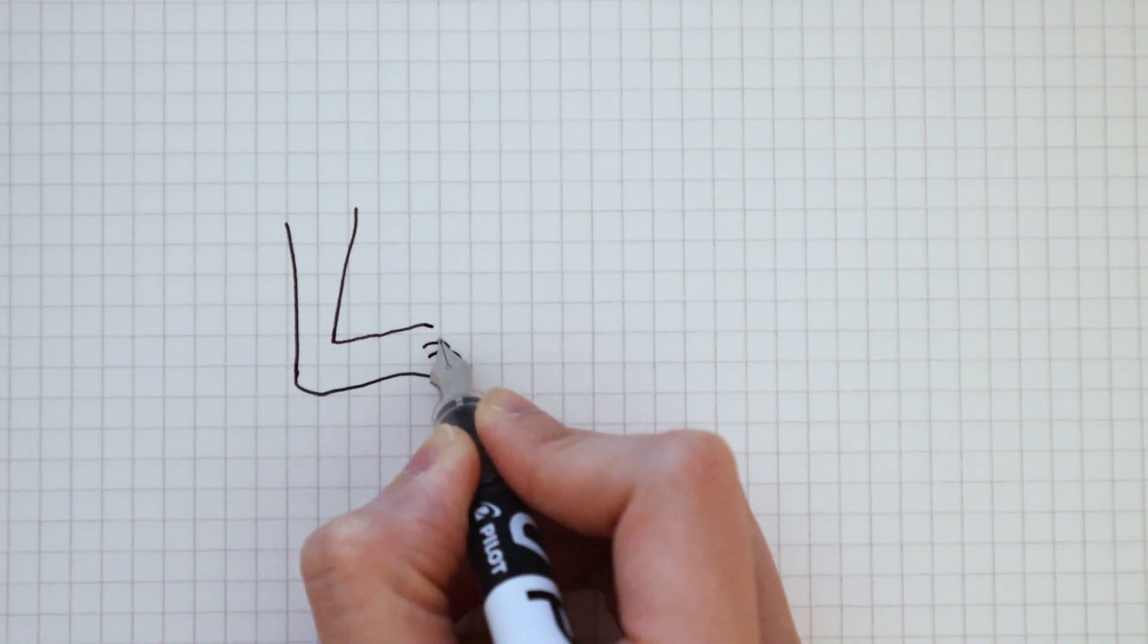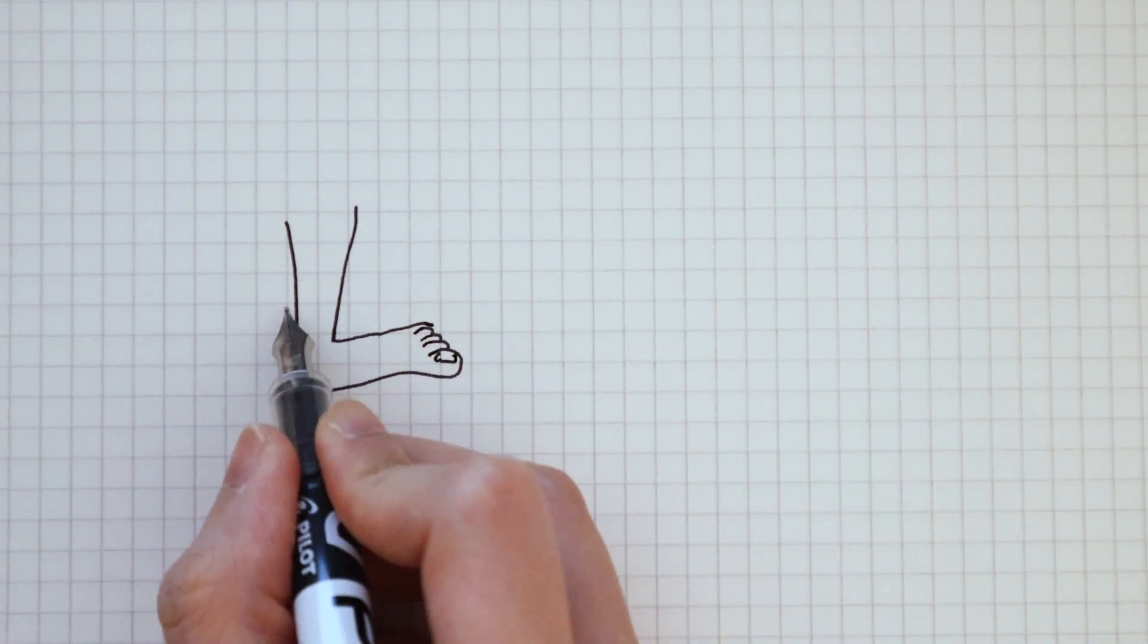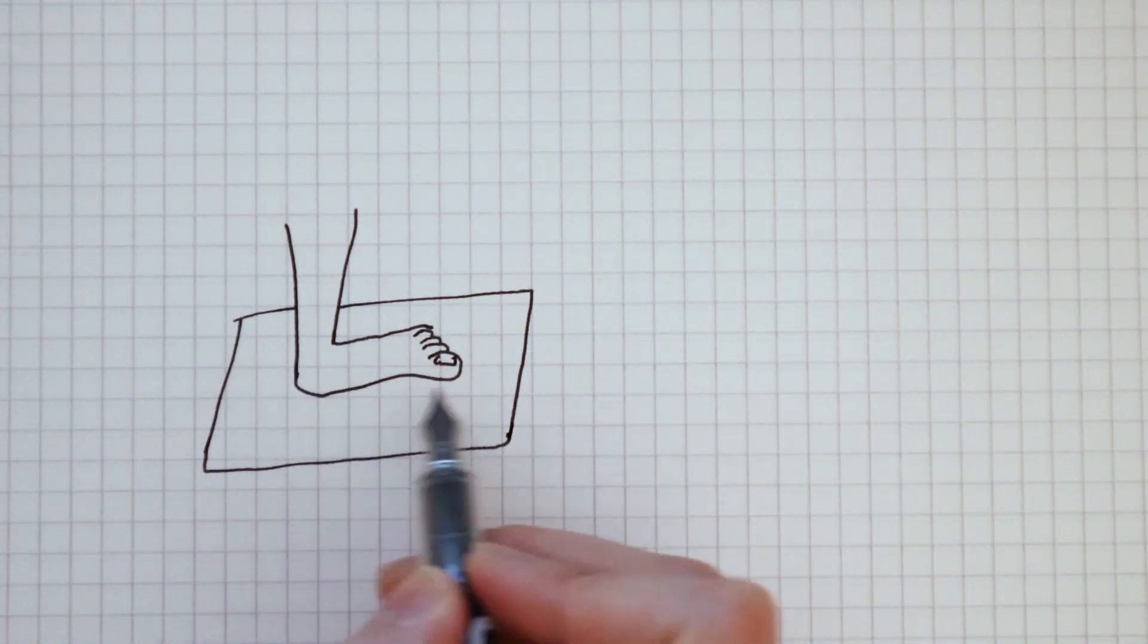To find the contact area between my foot and the floor, I need to use a piece of grid paper and trace my foot around it.